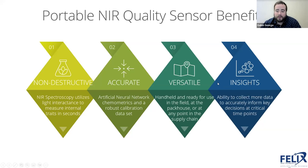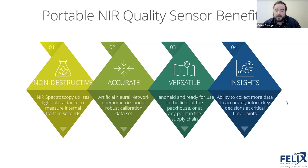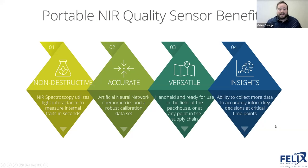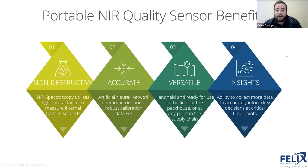These are versatile instruments — the portable aspect means they can be used pretty much wherever you want. Another key aspect often overlooked is that you can collect significantly more data to more accurately inform key decisions at critical time points. When you're doing it non-destructively, the only cost is the time you put into it. If you're getting measurements in seconds and they're all non-destructive, you can collect significantly more data to more accurately inform you about the quality of your product. Building these larger databases — that's kind of the future of where we're going with ag.